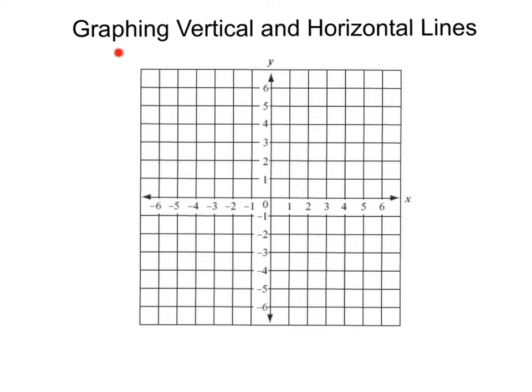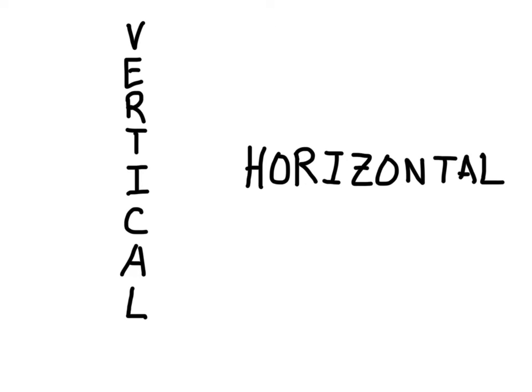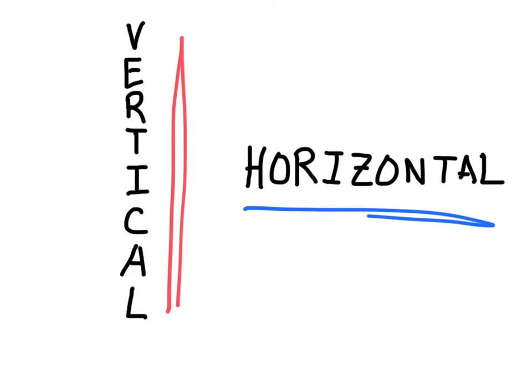Finally, the moment you've been waiting for. We're going to graph some vertical and horizontal lines. Vertical means directly up and down, while horizontal refers to something that goes side to side. Neither of these include diagonals.